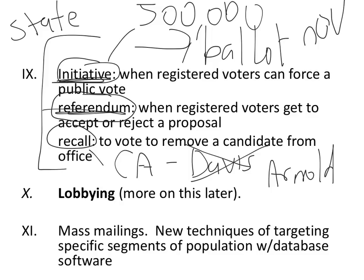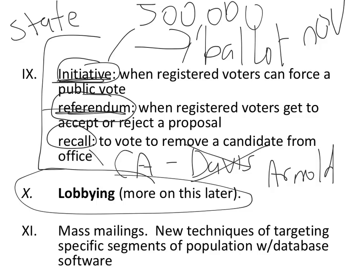These are all tactics that interest groups use, and they spend money to accomplish their goals — they pay people to collect signatures outside stores. Lobbying is when people in Washington D.C. wine and dine Congress members to get access and influence. Mass mailings involve sending targeted mail to specific parts of the population, like Democrats over 65, to spread the word about their interest group.